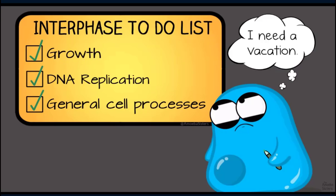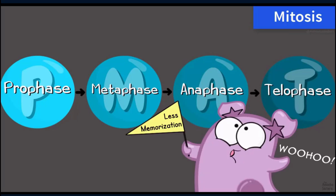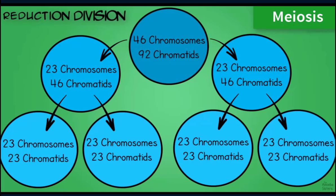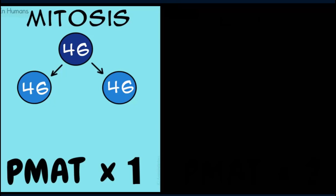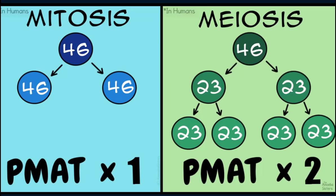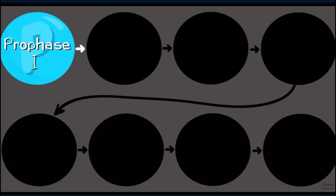Interphase checklist done — now we can move into meiosis. You might remember the mitosis stages: PMAT — prophase, metaphase, anaphase, and telophase. In meiosis you still use those terms, but because meiosis is a reduction division going from 46 to 23 chromosomes, you actually divide twice. So instead of doing PMAT once like in mitosis, in meiosis you do PMAT twice. Numbers are added after the phases to indicate whether you're in the first or second division.